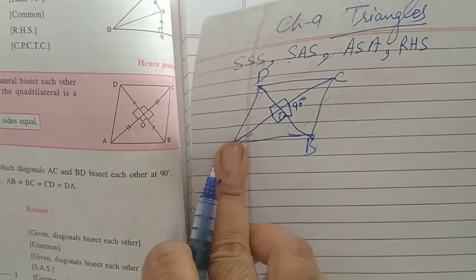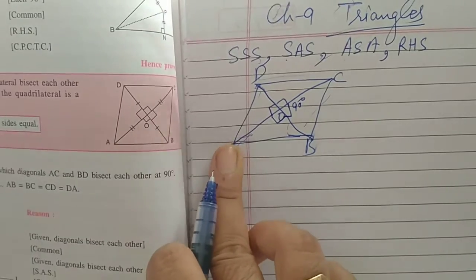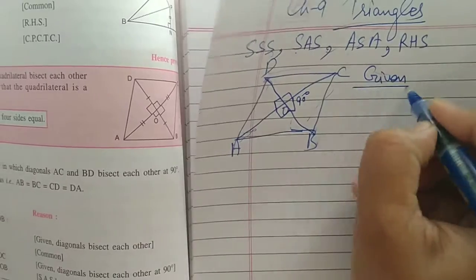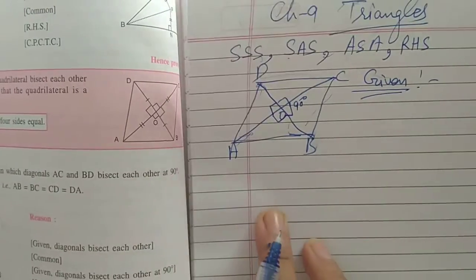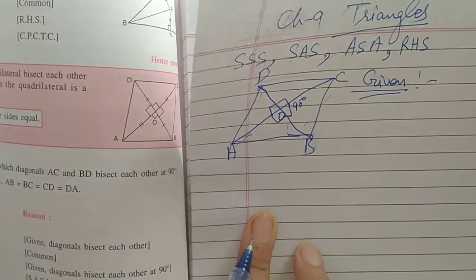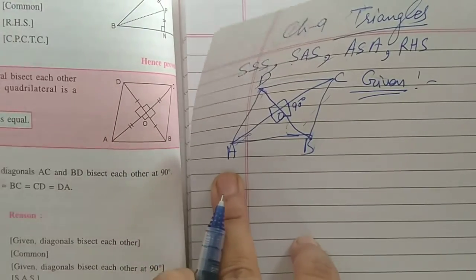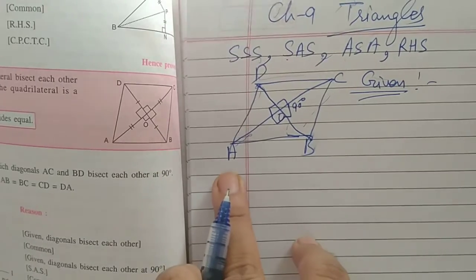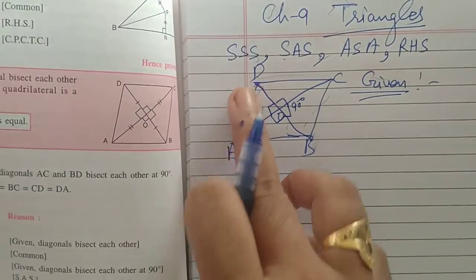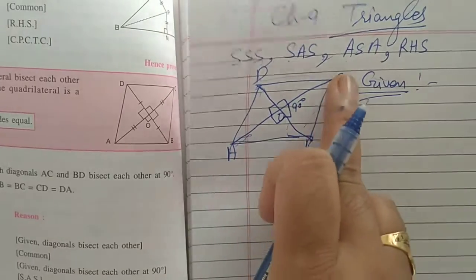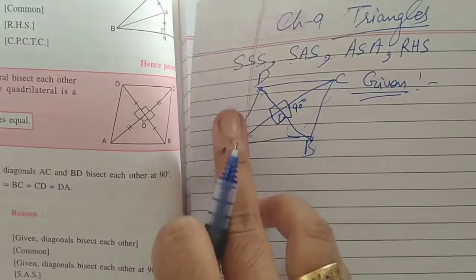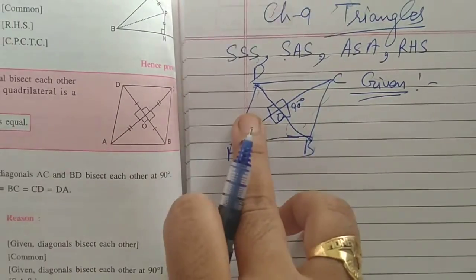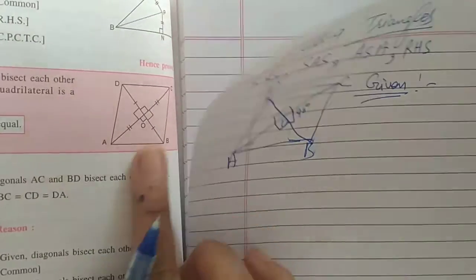So, it is given. First of all, you have to write how to write the given. Given. You have to write given. What will we write in given? Whatever is given in the statement for you. Here, what is given? You will write a quadrilateral.